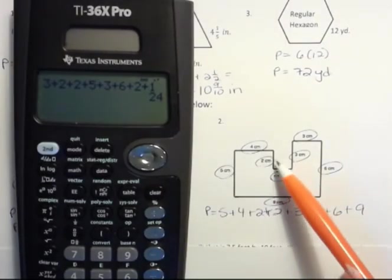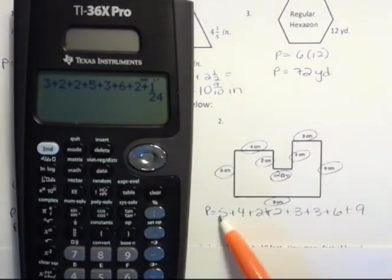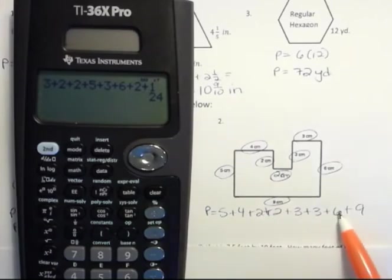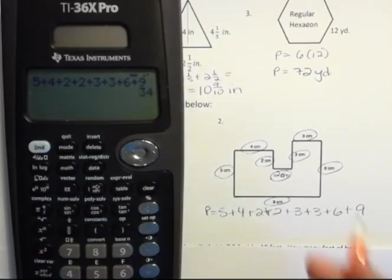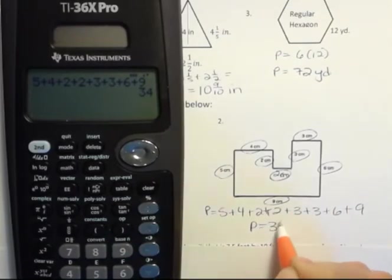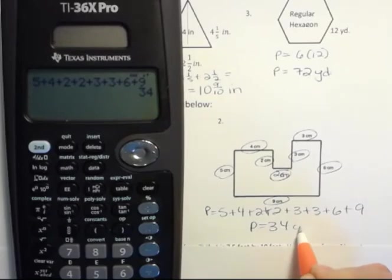And it doesn't matter where you start, but you just want to go all the way around and add those up. And once you get those added up, then you put them in your calculator. Notice I have eight sides and eight things that I'm adding. That's how I can feel confident that I didn't miss any. 5 + 4 + 2 + 2 + 3 + 3 + 6 + 9 is 34. What's the unit? Well, the unit is centimeters.